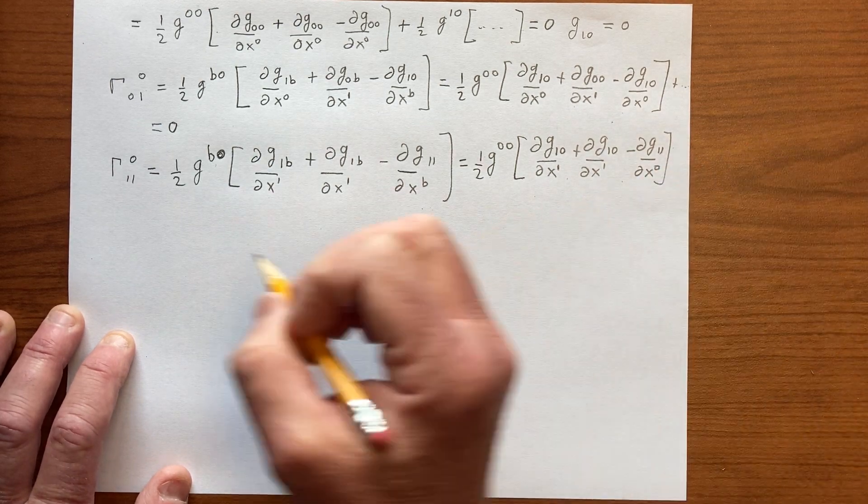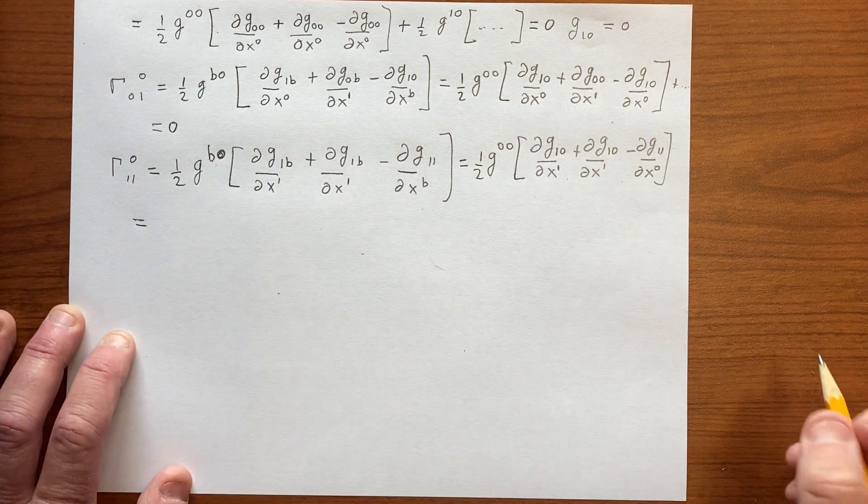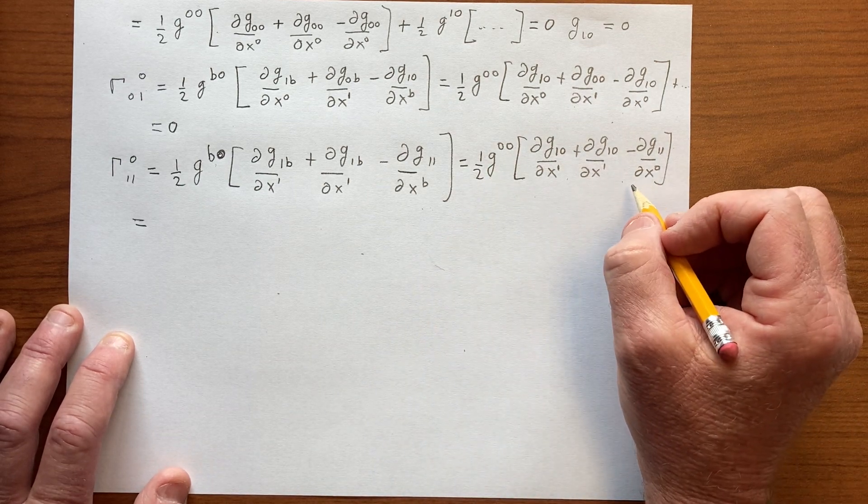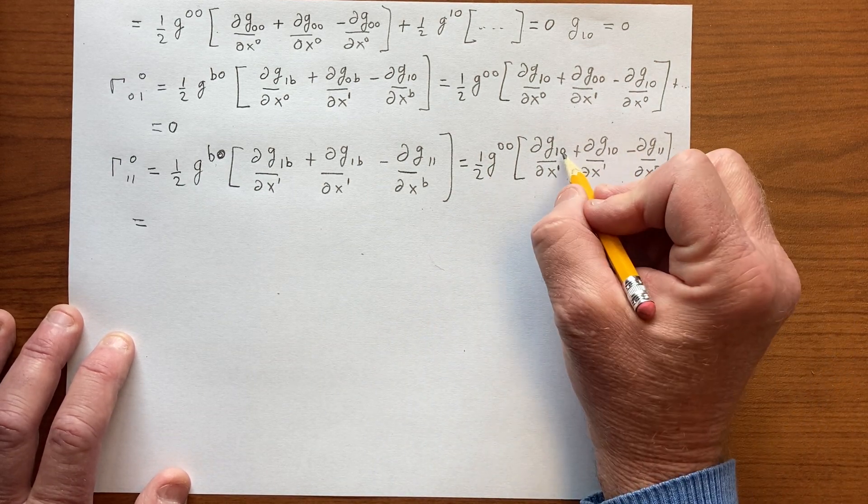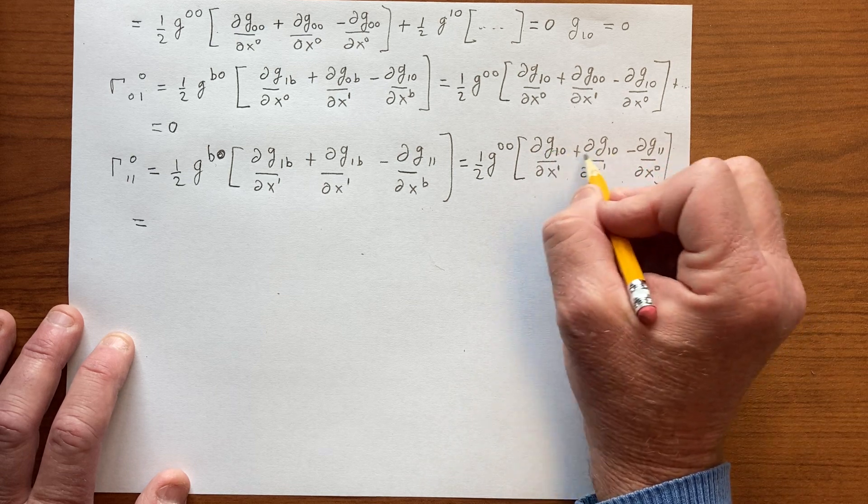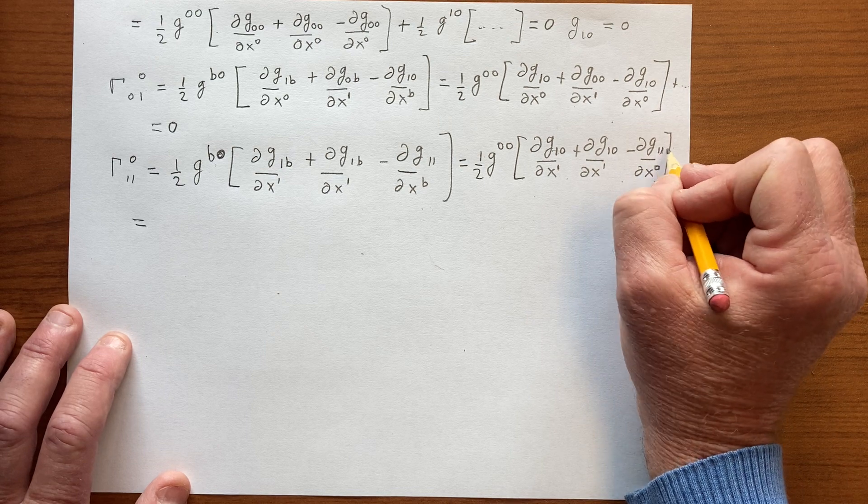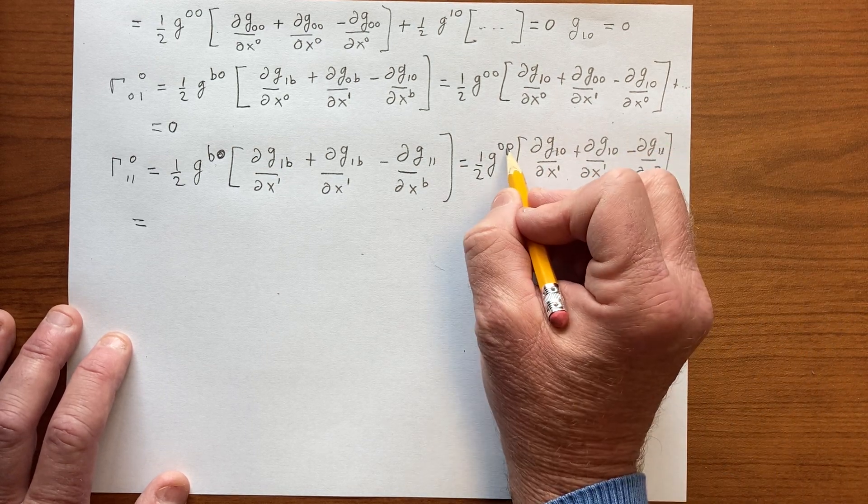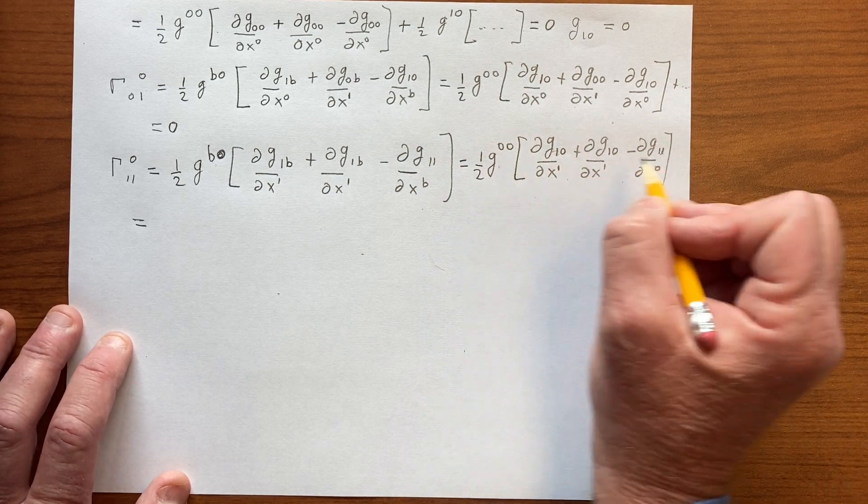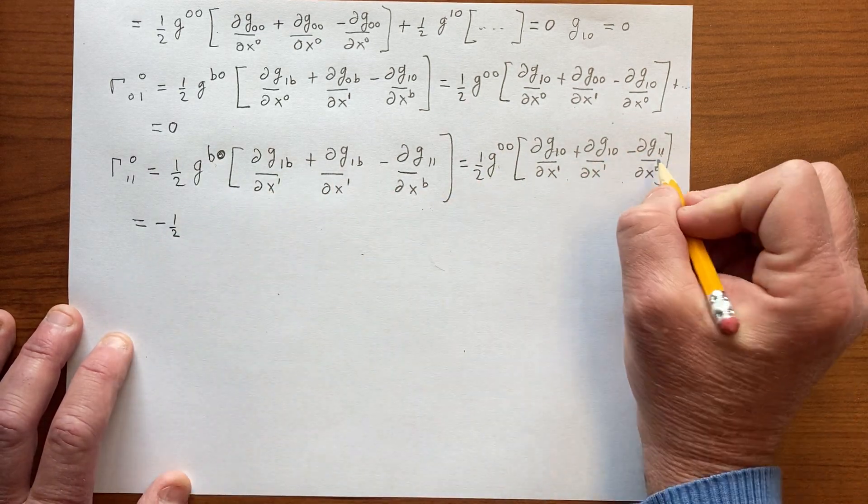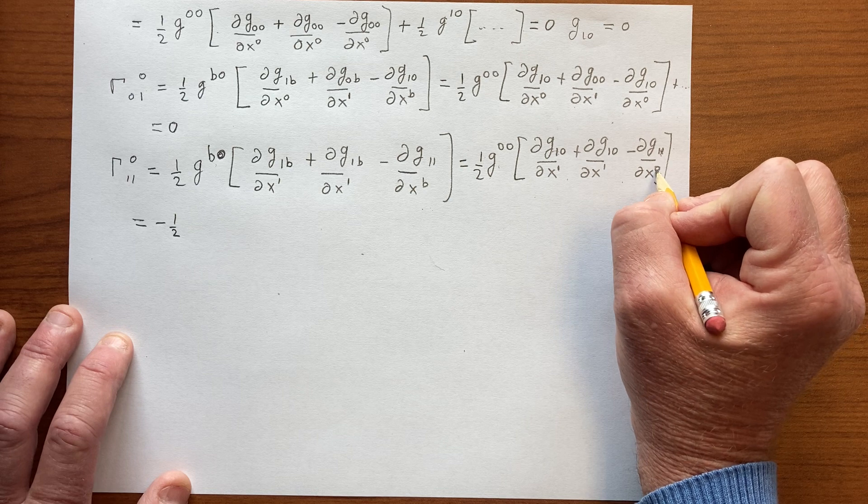So we have nothing to add there. So that's going to be equal to, let's see, so these two are 0, so there's nothing to take derivatives of, whereas g_11, we know that that's r². So g^00 is the same as g_00. That's just 1.